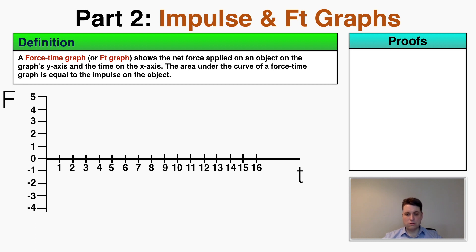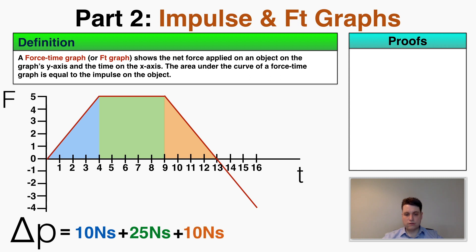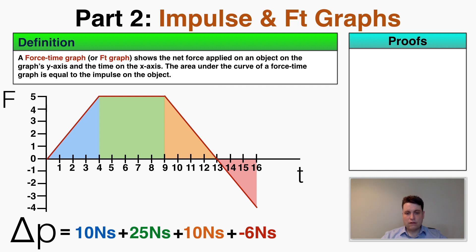To find the total change in momentum from a non-constant force, I just find the total area under the curve. For example: a right triangle with half-base-times-height gives 10 Newton seconds; a rectangle gives 25 Newton seconds; another shaded region gives 10 Newton seconds. Any area below the x-axis is considered negative — a triangle below gives negative 6 Newton seconds (one-half times 3 times negative 4 times one-half). Adding all regions together gives a total impulse of 39 Newton seconds.